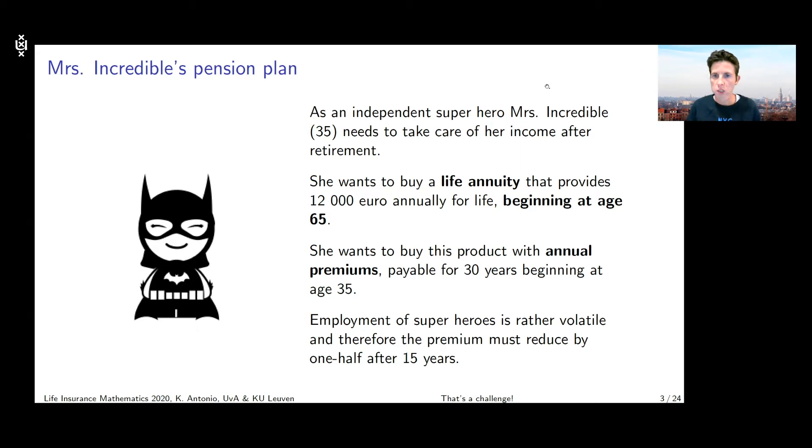We've got an independent superhero, Mrs. Incredible, who is currently age 35 and she needs to take care of her income after retirement. She wants to buy a life annuity which provides her 12,000 euro annually for life and starts paying at age 65. And she wants to buy this product with an annual premium that is payable for 30 years starting at age 35.